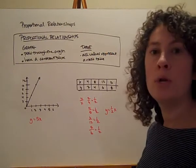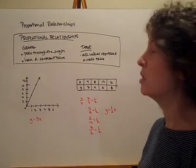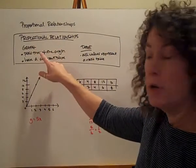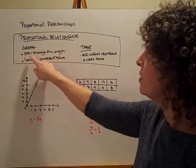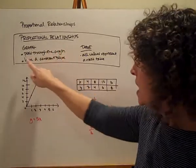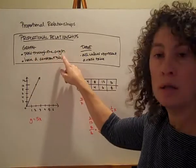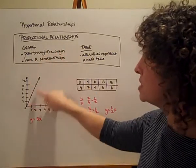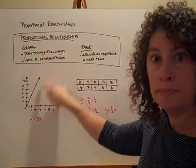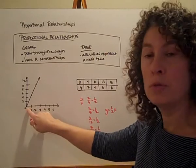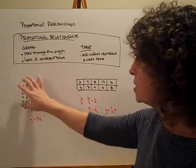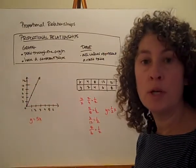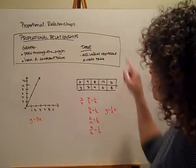So how will we know if a relationship is proportional or not? Well, if I look at a graph, I'm going to see that it passes through the origin, and it also has a constant slope. So if I look at a graph, I'm going to see a straight line that passes through the origin. That's what I'll see if I'm looking at proportional relationships in a graph.